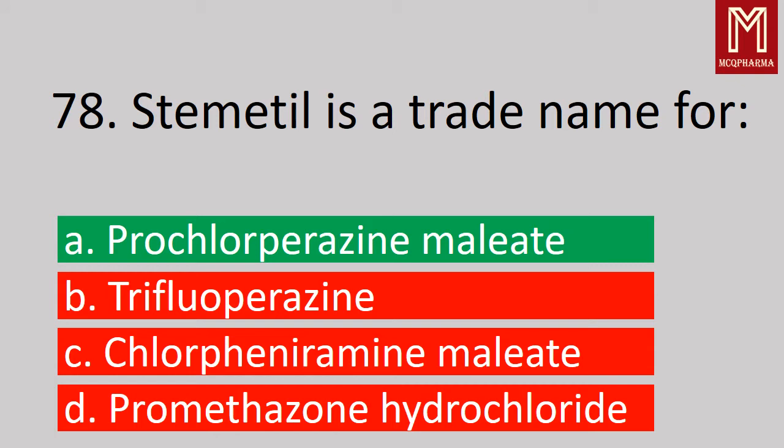Next, Stemetil is a trade name of — correct answer, Option A: Prochlorperazine maleate. It is used to treat dizziness, vertigo, nausea, vomiting, etc.